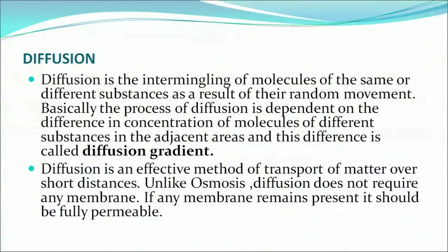Now what is diffusion? Diffusion is a process by which plant roots also absorb water. Diffusion is the intermingling of molecules of the same or different substances as a result of their random movement. The process of diffusion is dependent on the difference in concentration of molecules of different substances in adjacent areas, and this difference is called the diffusion gradient. Diffusion is an effective method of transport of matter over short distances. Unlike osmosis, diffusion does not require any membrane; if a membrane is present, it should be fully permeable.